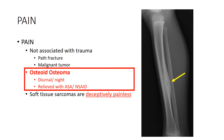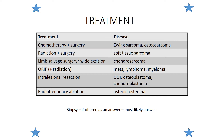An osteoid osteoma presents as an eccentric bone-forming lesion with a central target. This should be an easy question to remember: a young patient, diaphyseal bone lesion, diurnal night-and-day pain symptoms relieved by aspirin or anti-inflammatories.